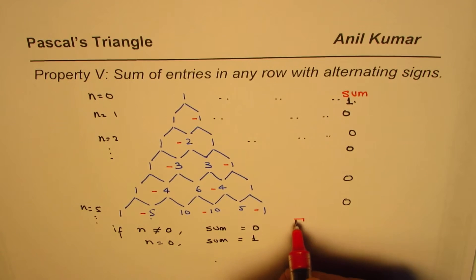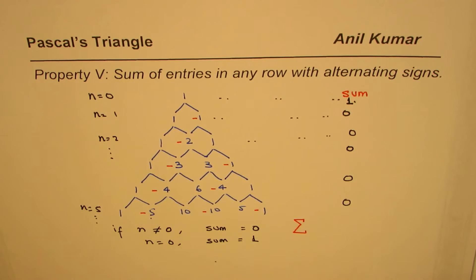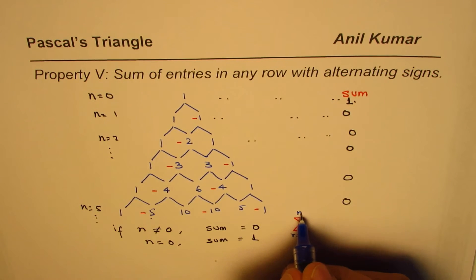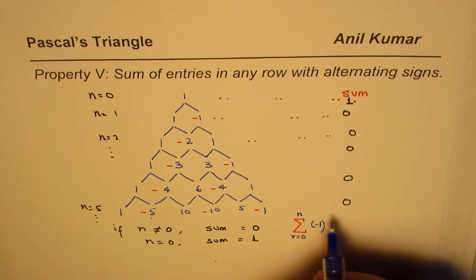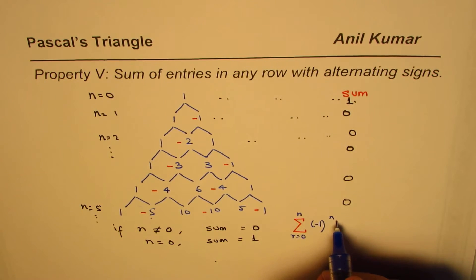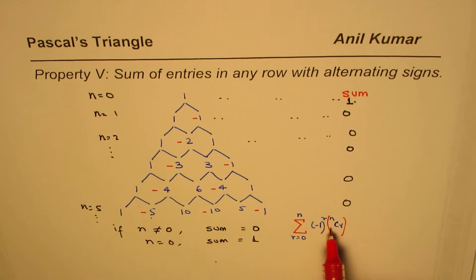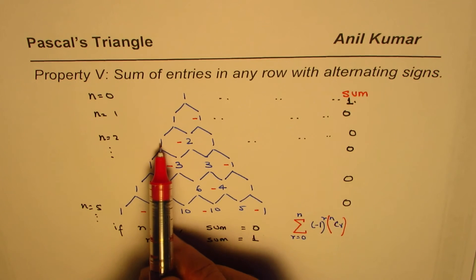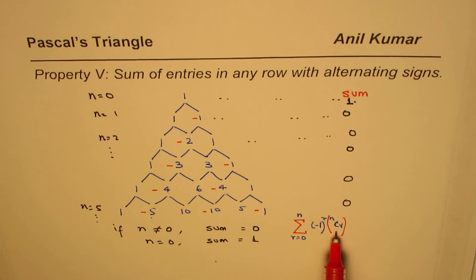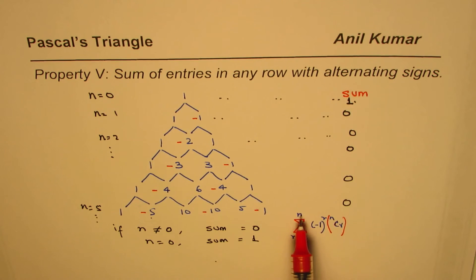In general we can use summation notation to write this. When r goes from zero to n, the sum is (-1)^r times nCr. The term (-1)^r ensures every alternate term becomes negative — when r is zero, one, two, and so on. When you add them up you get zero, as long as n is greater than zero, because the terms cancel out.